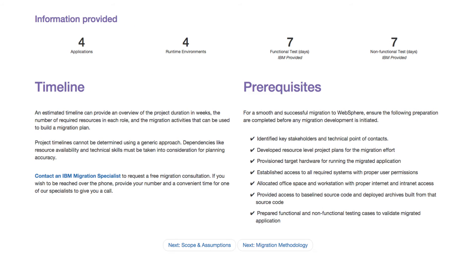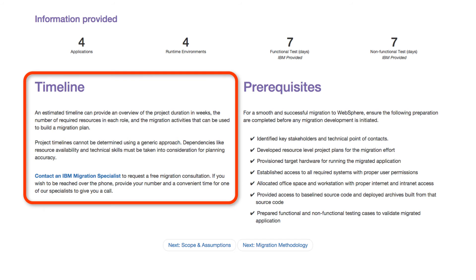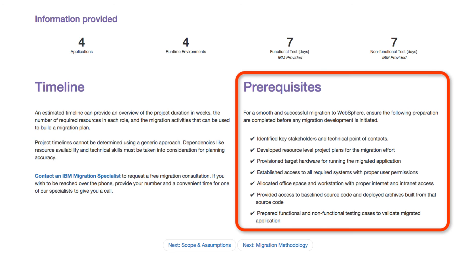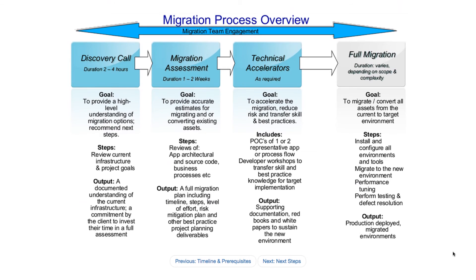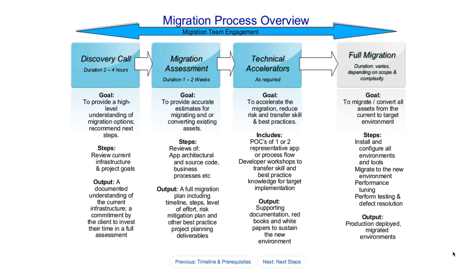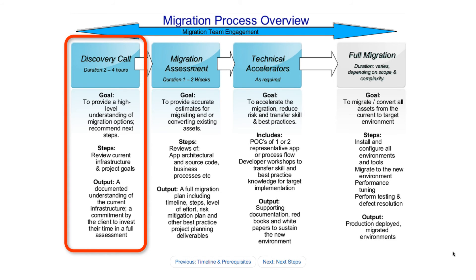The next section of the report is the timeline and prerequisites. Generating a timeline is a feature that is currently work in progress — it is complex and requires additional inputs. For now, please contact your sales rep or our team directly to obtain a free migration consultation. The prerequisite section lists some key planning and preparations that should be achieved before any migration activity begins. The methodology section presents a high-level overview of the IBM migration methodology and process. The initial discovery call phase is aimed to provide the same ballpark estimates as addressed by this online WebSphere migration discovery tool. However, for customers with special needs or significantly large implementations, our migration specialists can provide a more tailored estimate report.